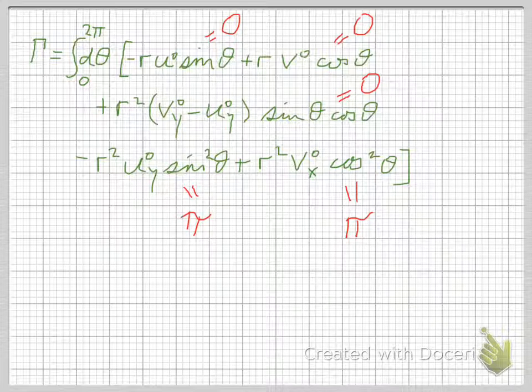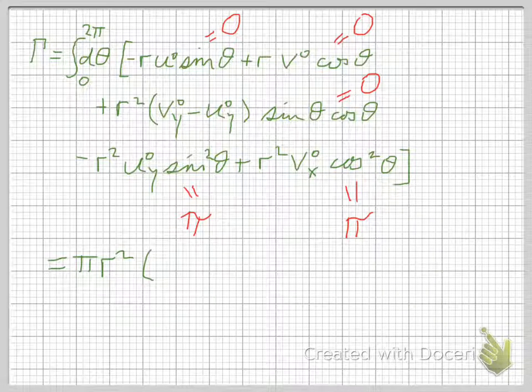So putting it all together, what do we get? We get this circulation is equal to pi r squared, taking out that common factor, pi r squared, and then we have a difference, v0x minus u0y. And if you remember, this is just the z component of the vorticity, or the curl of the velocity. It's pi r squared times omega z, where omega is curl cross u, as we discussed earlier.